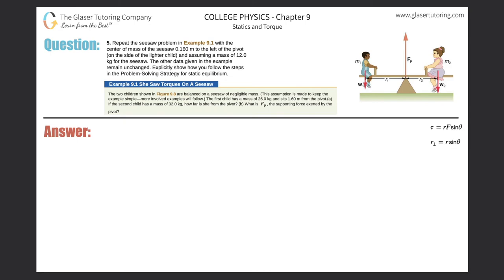Number five, repeat the seesaw problem in Example 9.1 with the center of mass of the seesaw 0.16 meters to the left of the pivot on the side of the lighter child and assuming a mass of 12 kilograms for the seesaw. Here's Example 9.1 - it tells us the first child has a mass of 26 kilograms and sits 1.6 meters from the pivot point which is located there. The second child has a mass of 32 kilograms and we're trying to find out how far she is from the pivot point. So we're trying to find that x distance.